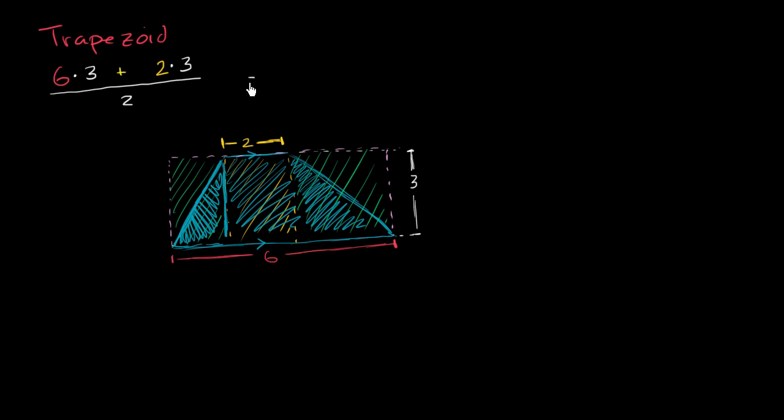Or you could also think of it as, this is the same thing as 6 plus 2. And I'm just factoring out a 3 here. 6 plus 2 times 3, and then all of that over 2, which is the same thing as, and I'm just writing it in different ways. These are all different ways to think about it. 6 plus 2 over 2, and then that times 3.